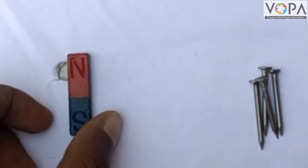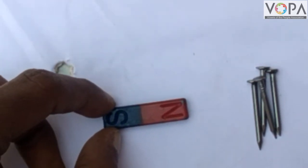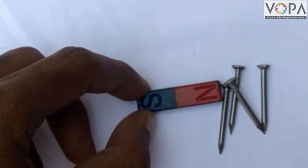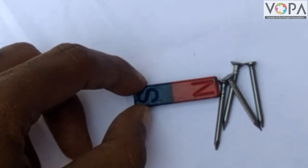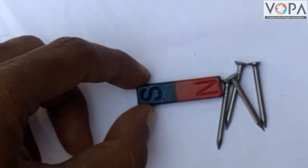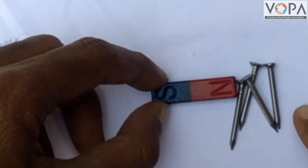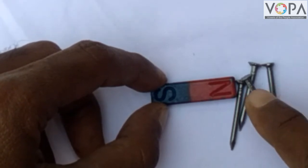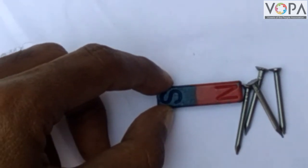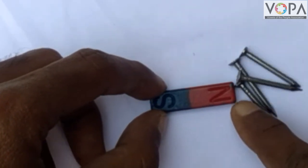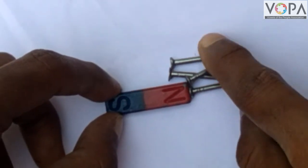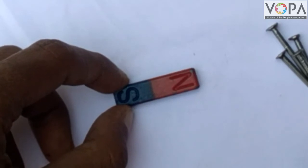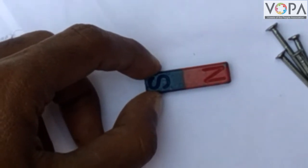Now slowly move the magnet towards the pins. We observe that the iron nails get attracted towards the magnet. The magnet attracts these iron nails from afar. In other words, a magnet has an effect even at a distance.